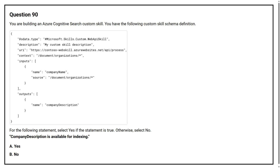Question number 90. You are building an Azure Cognitive Search custom skill. You have the following custom skill schema definition. For the following statement, select yes if the statement is true, otherwise select no. Company description is available for indexing.